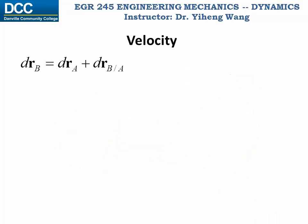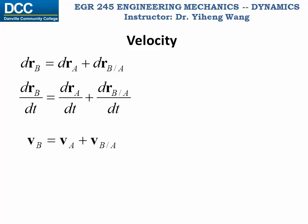If we take the time derivative of this equation, we get the equation for linear velocities for any two arbitrary particles in the same rigid body undergoing general plane motion. It says that the absolute velocity of particle B equals the absolute velocity of particle A plus the relative velocity of B with respect to A. The velocity of particle B has two contributions: vA represents the contribution from translation.